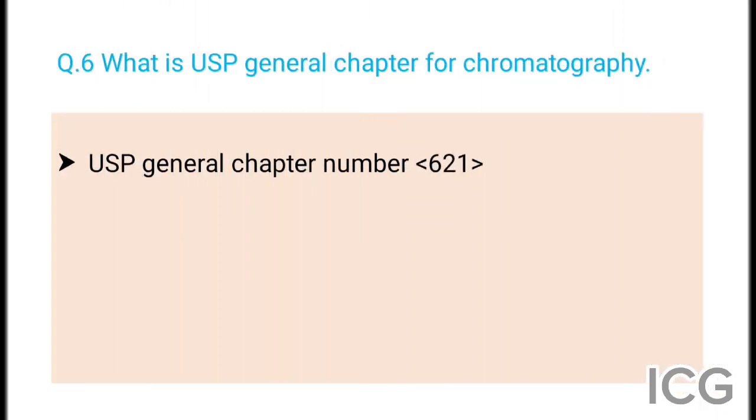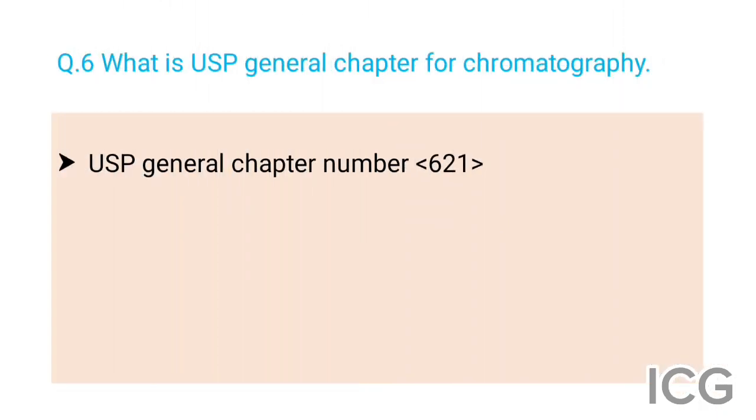That is called normal phase chromatography. The next question is: what is the USP general chapter for chromatography? The answer is USP general chapter number 621.